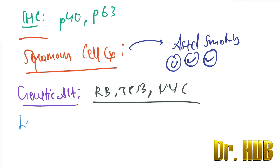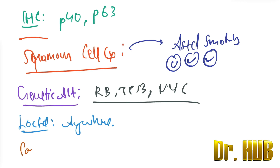Where is it located? The location — it can be present anywhere, whereas in adenocarcinoma it was peripheral and in squamous carcinoma it was central or hilar. Looking at the precursor lesions, the answer is none.